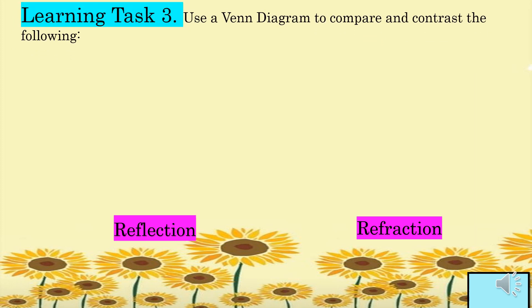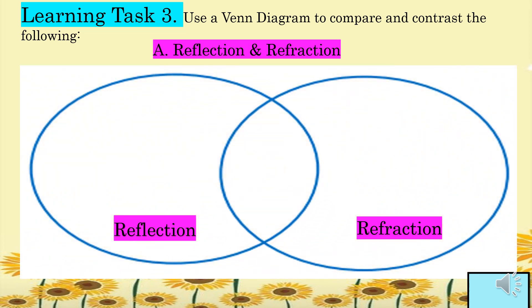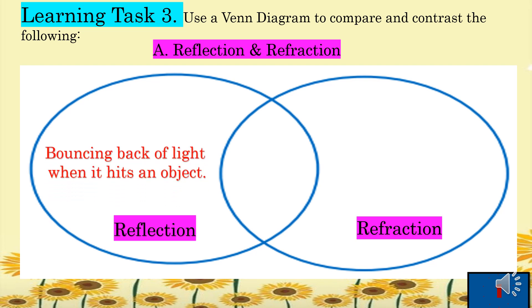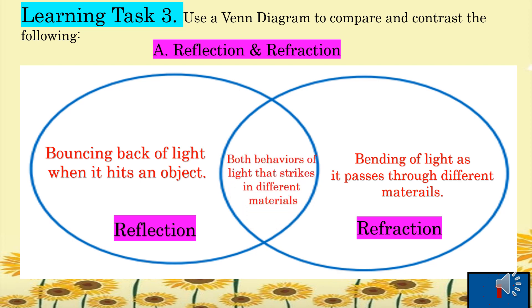For learning task three, use a Venn diagram to compare and contrast. For letter A, reflection and refraction: reflection is the bouncing back of light when it hits an object; refraction is the bending of light as it passes through different materials; and both are behaviors of light that occur when light strikes different materials.